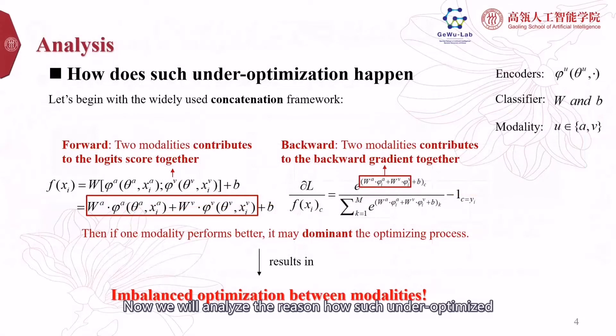Now we will analyze the reason: how does such under-optimized training happen? Let's begin with the concatenation framework. We first give the definitions: encoders φ and its parameters θ, the classifier W and b, and modality indicator u—we'll take a and v as examples.